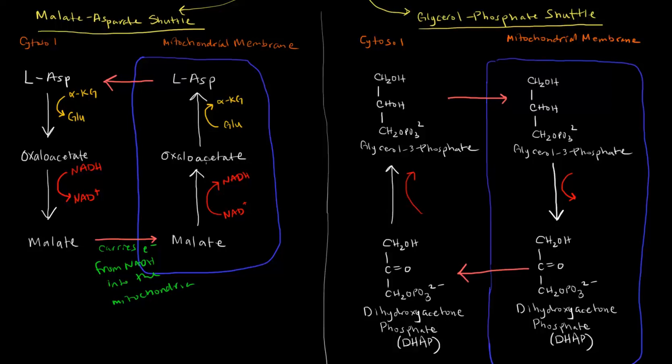So now oxaloacetate can be converted back to L-aspartate. This is sort of the reverse reaction here. And L-aspartate can also cross the mitochondrial membrane back out here, and then this process can happen again. So basically, in this case, this NADH is still an NADH. So now it can go to the electron transport chain and be valued at 2.5 ATP.